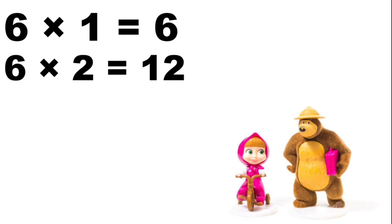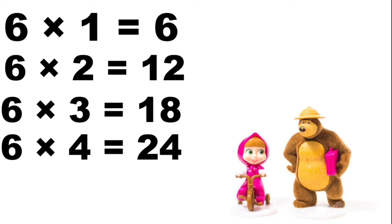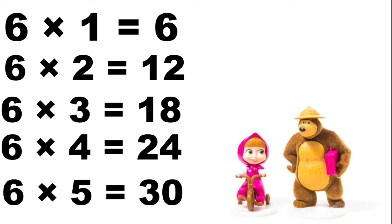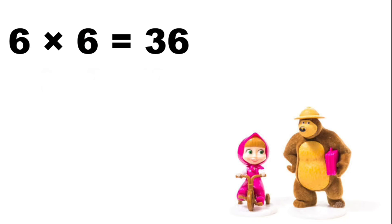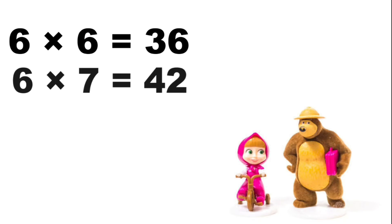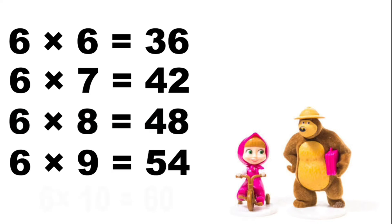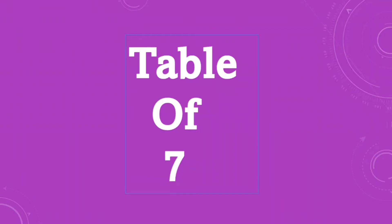Six ones are six, six twos are twelve, six threes are eighteen, six fours are twenty-four, six fives are thirty, six sixes are thirty-six, six sevens are forty-two, six eights are forty-eight, six nines are fifty-four, six tens are sixty.